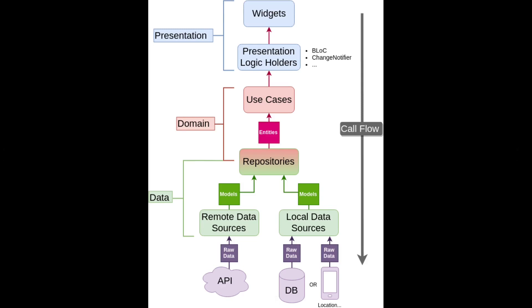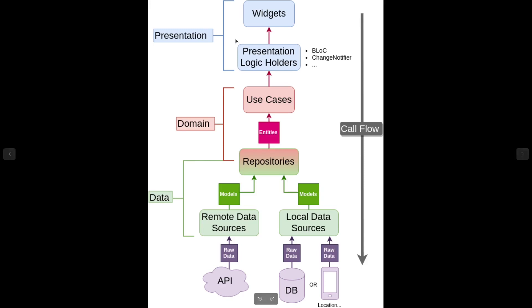The domain layer is the layer that should contain your core business logic, also known as use cases. Previously, if you were writing code without architecture, you were writing all your logic in your controllers or Bloc or ChangeNotifier — packing everything into the presentation layer. But in clean architecture we have layers for everything. The logic you were writing in the presentation layer will now come to the domain layer. Within the domain layer we have use cases, which are just a wrapper for the actual logic.